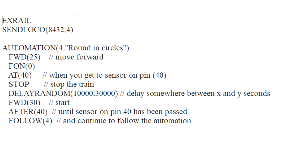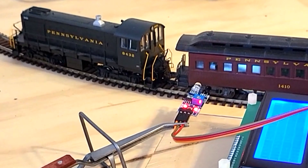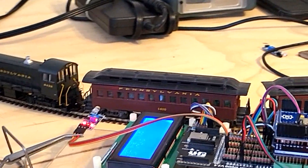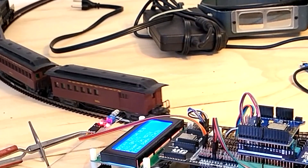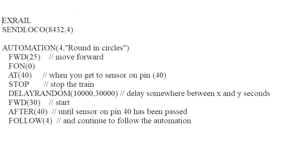It then goes forward again at speed step 30. The AFTER command appears to keep the IR sensor active - you'll notice it fluctuates as there are gaps between the rail cars, and finally shuts off after the last rail car passes. This is presumably so you don't get several stops in the gaps between rail cars.